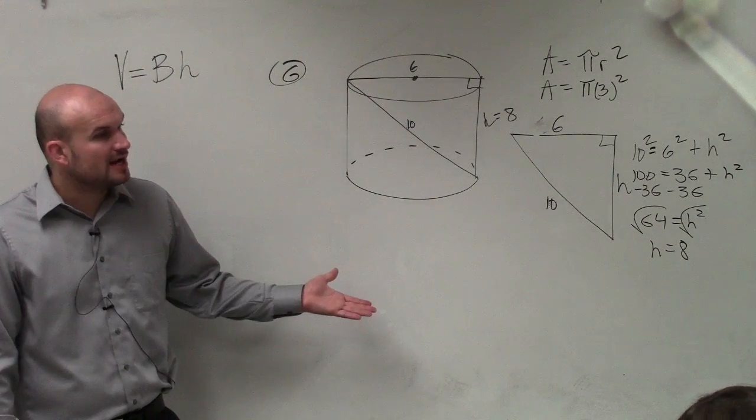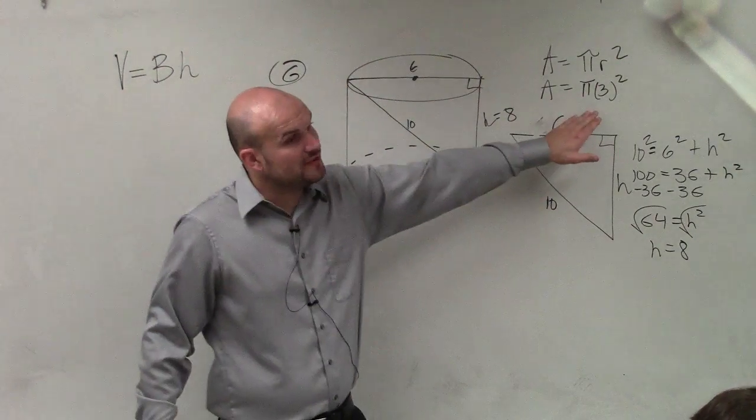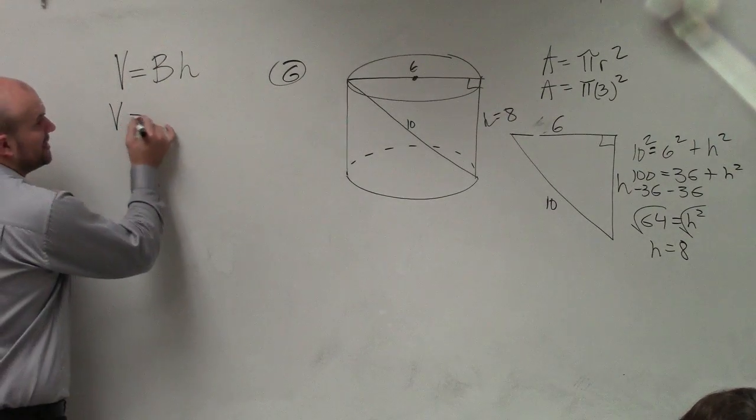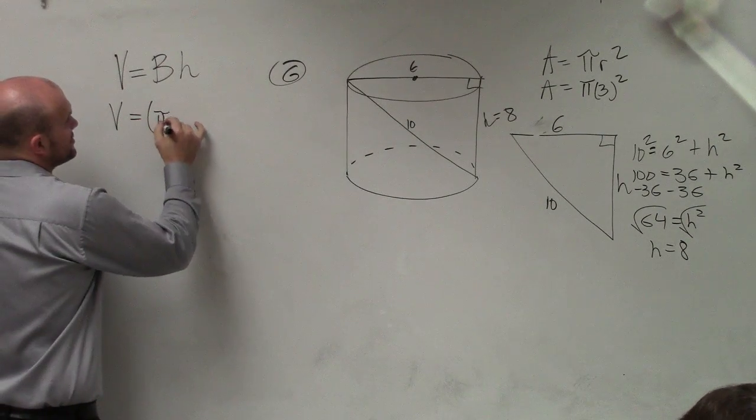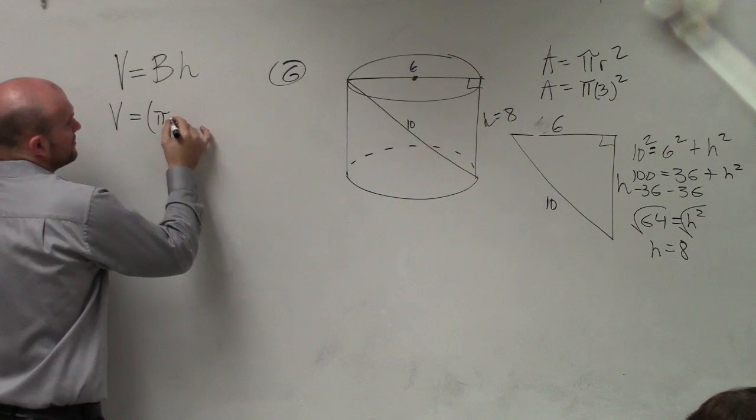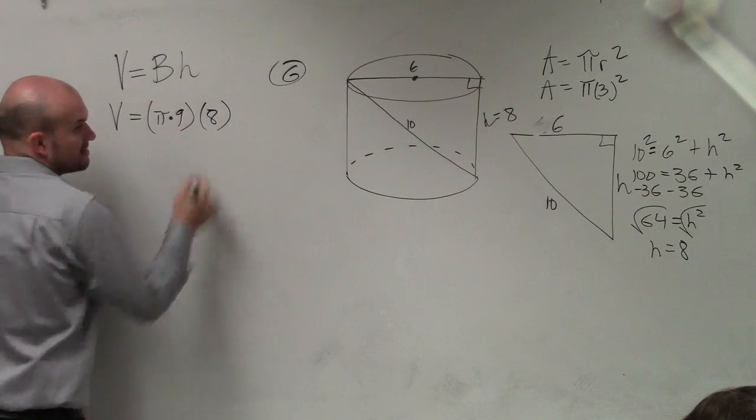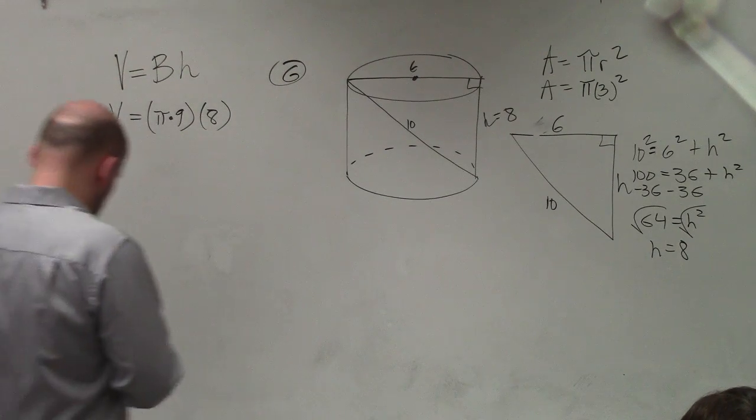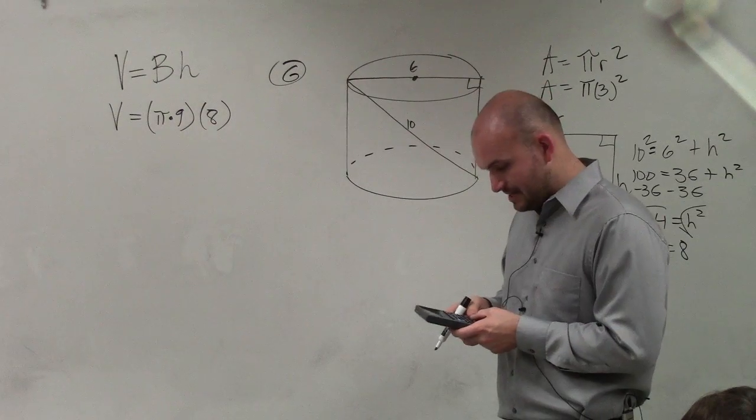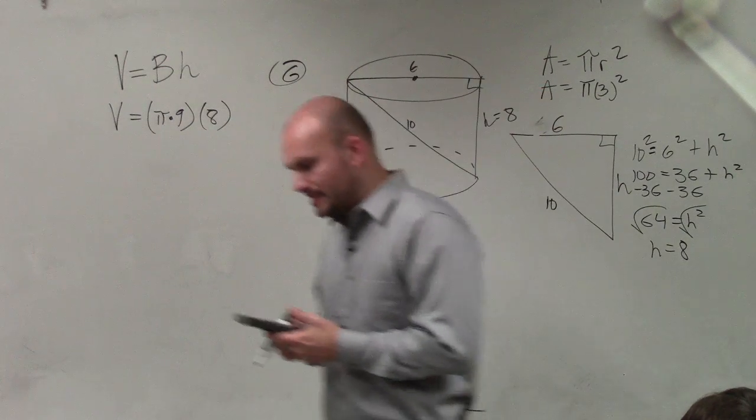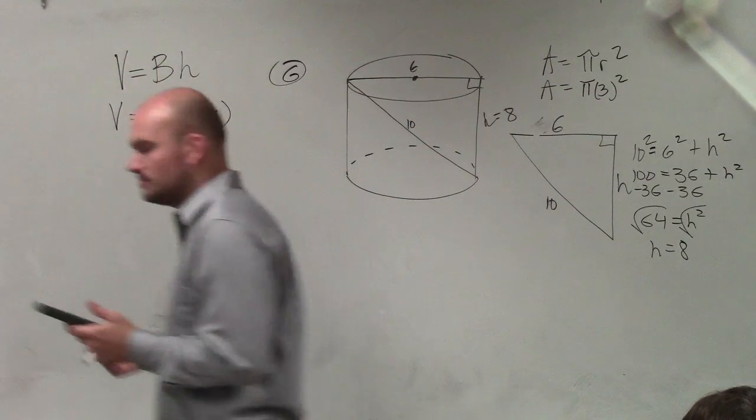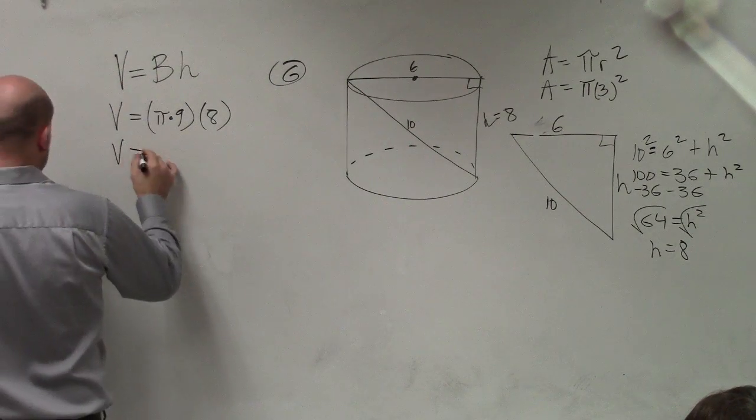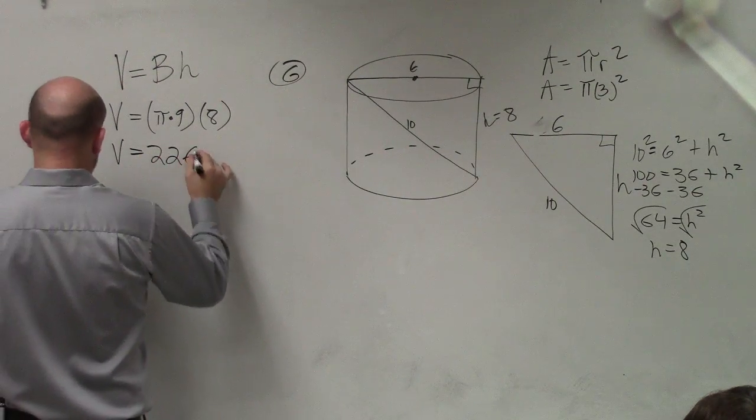All right, so now once we know the height, and I know the area of the base, now I can go ahead and multiply them. So volume equals my area of the base, which is Pi, 3 squared is 9, times 8. And then what I'll simply do is I'll just go ahead and take all this information and I'll multiply it in my calculator. So I'll do Pi times 9 times 8, and I get 226.2 rounded to the 10th.